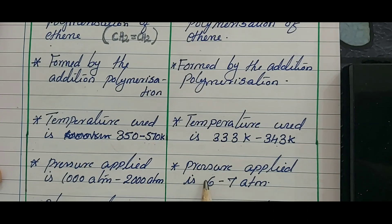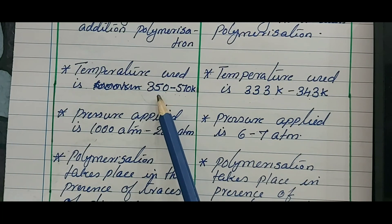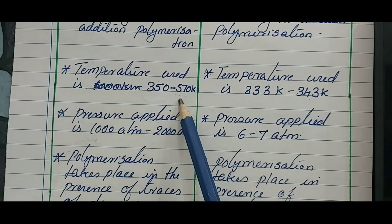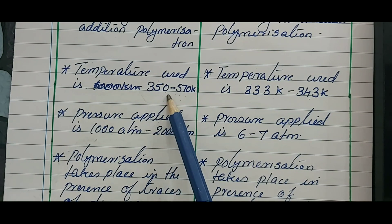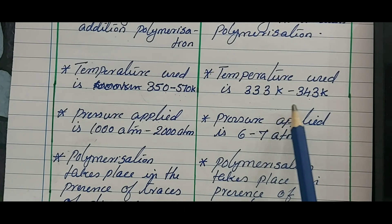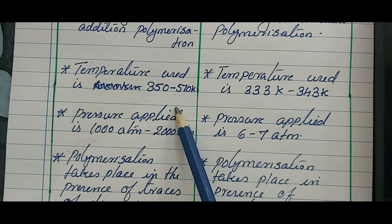Looking at the pressure difference: in the case of low density polythene it is 1000 atm to 2000 atm, but in the case of HDP the pressure applied is only 6 to 7 atm. So in the case of LDP preparation, both the temperature applied and the pressure applied are higher — more vigorous conditions are used.